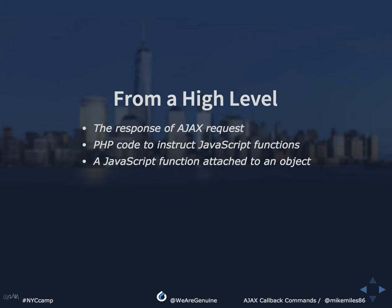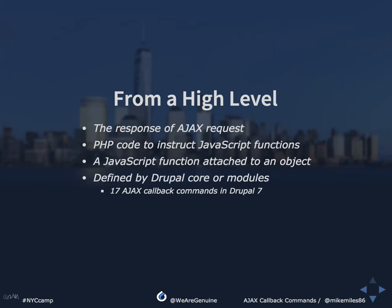The JavaScript functions are attached to a global JavaScript object provided by the Ajax framework — similar to Drupal behaviors, there's a global Ajax commands object. Commands are defined by Drupal core or by additional modules such as Views and CTools. In Drupal 7 there are 17 core Ajax callback commands. In Drupal 8 there are 22, so we've gained a few more.